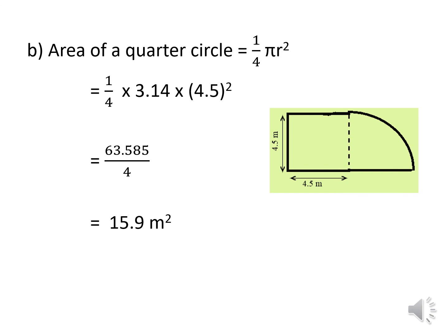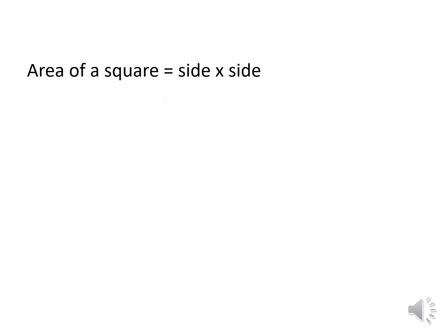Now find the area of the square — it is easy. The area of a square is side times side. One side is 4.5 meters, and all sides are the same, so 4.5 times 4.5. The answer is 20.25 meter square.